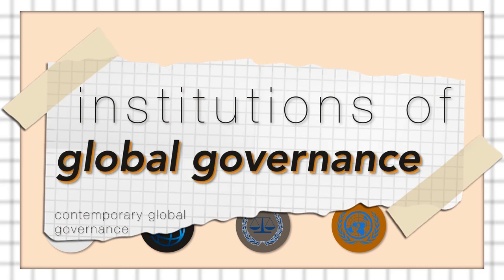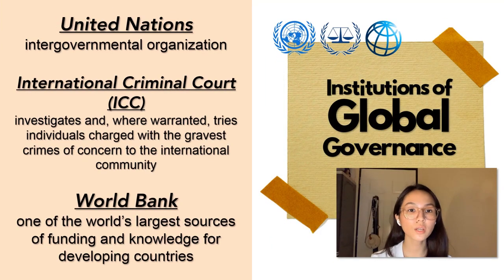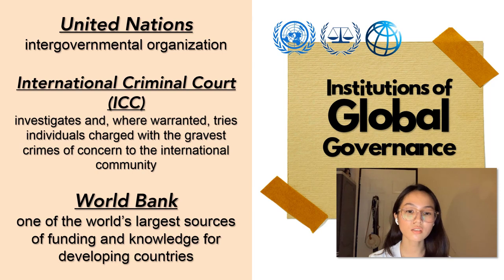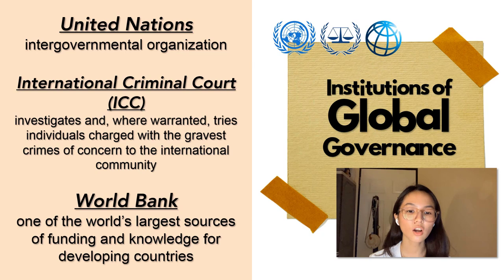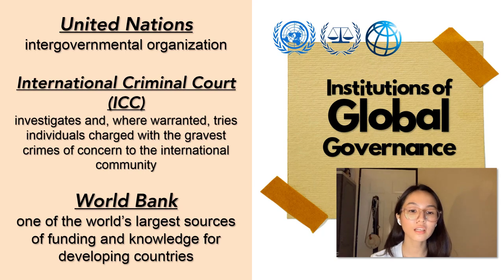Under global governance, there are three institutions. The first one is the United Nations or UN. The United Nations was founded in 1945 after the Second World War. It is an intergovernmental organization that aims to maintain international peace and security, develop friendly relations among nations, and promote social progress, better living standards, and human rights.